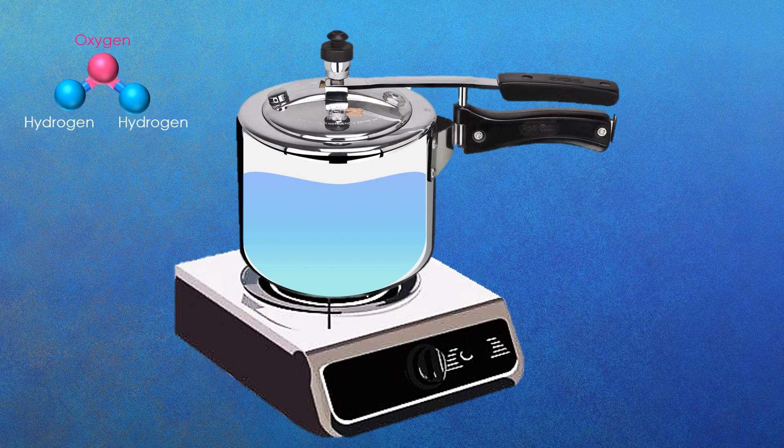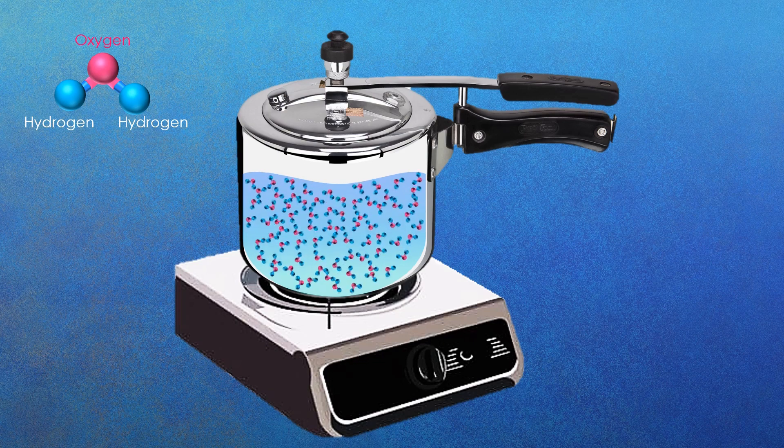Water consists of two hydrogen atoms and one oxygen atom. If you see microscopically, water inside a cooking vessel consists of millions of such molecules which are constantly vibrating and moving very slowly.